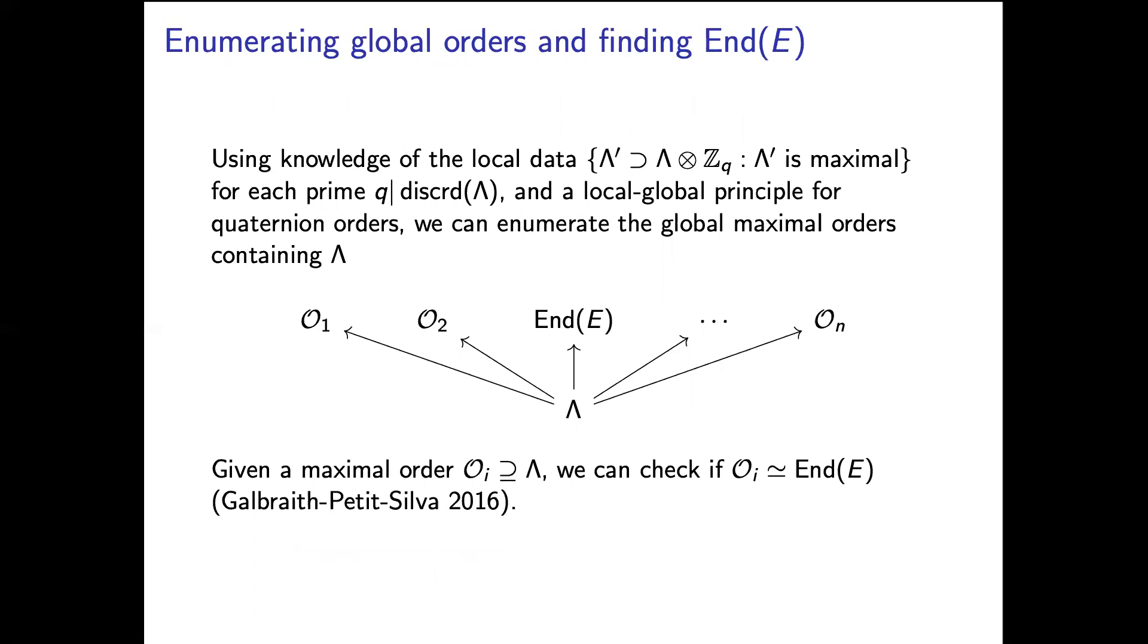So once we do this for each prime dividing the reduced discriminant we now have all the collections of q-maximal orders containing Λ. And now we can put these together with a sort of local-global principle for quaternion orders. And so we'll enumerate these maximal orders containing Λ one by one.